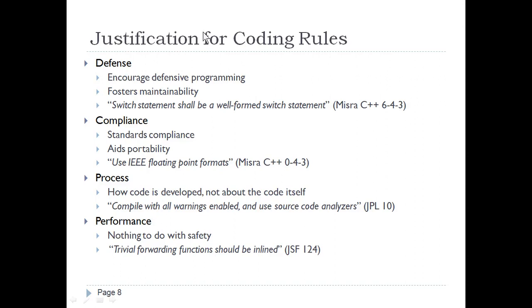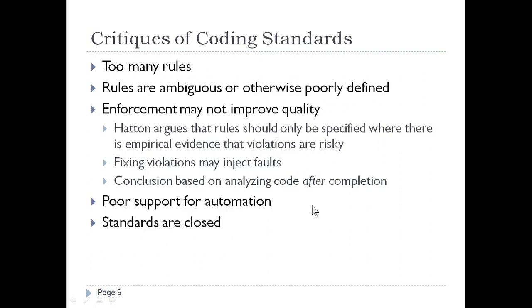Another justification is defense — encouraging defensive programming. For example, switch statements shall be well-formed. Compliance ensures standard portability, such as using IEEE floating point formats. The process rule says compile with all warnings enabled and use source code analyzers; this reduces bugs that need to be found later. The process describes how code is developed, not just the code itself. Performance rules such as trivial forwarding functions being inlined are separate from safety.